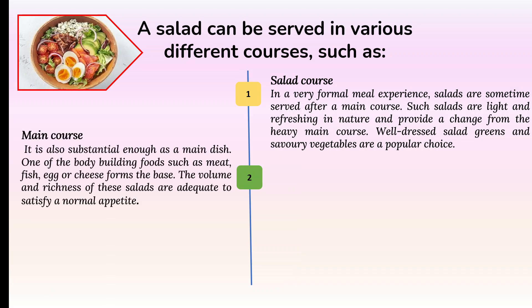Secondly, salad is also served as a main course, because it can be substantial enough as a main dish. Body-building foods such as meat, fish, eggs and cheese form the base of this kind of salad. The volume and richness of these salads are adequate to satisfy a normal appetite. During business hours, there is an international tendency to have a main course salad that supplements all body requirements in one place, saving time while fulfilling appetite and nutritional needs.